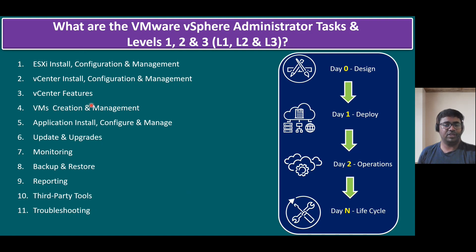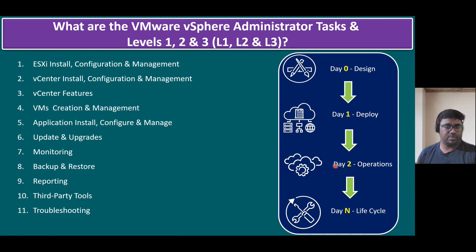These are all the common high-level VMware vSphere administrator tasks. Whatever tasks we discussed — tasks one through eleven — some organizations divide them into levels: level one, level two, and level three. In general, the level three team takes care of design; level two handles operations; and level three covers day zero and day one. Level two is focused on operations, while level one is focused on lifecycle updates and upgrades. Even before assigning updates and upgrades to the level one team, level two first performs them, prepares documentation, and assigns it to the L1 team. L1 follows the SOP-based procedure.